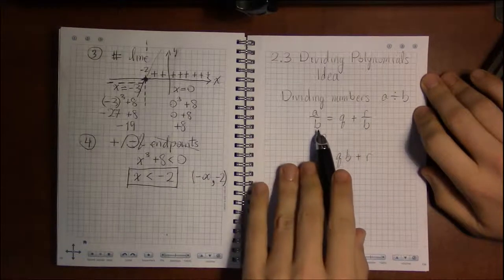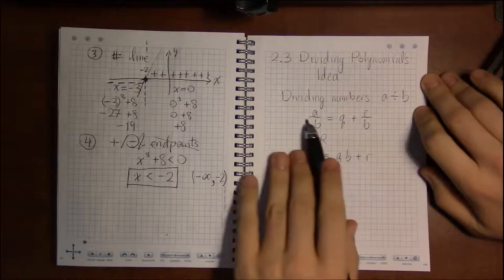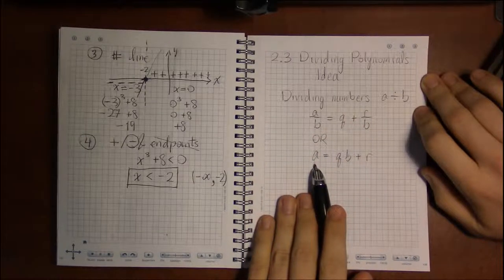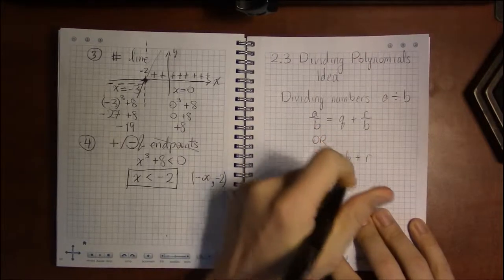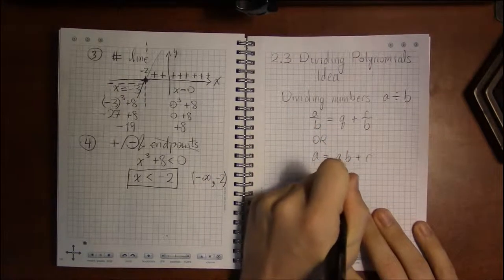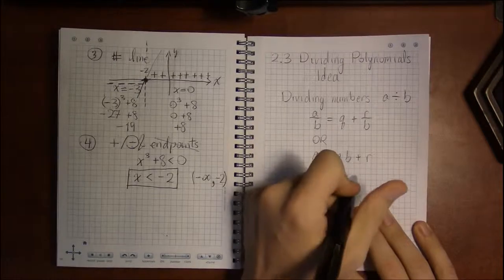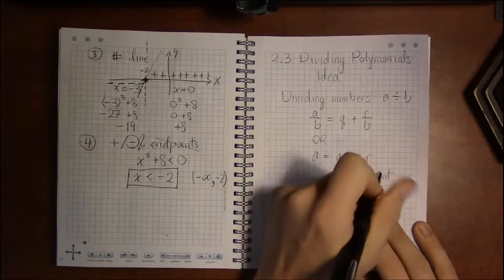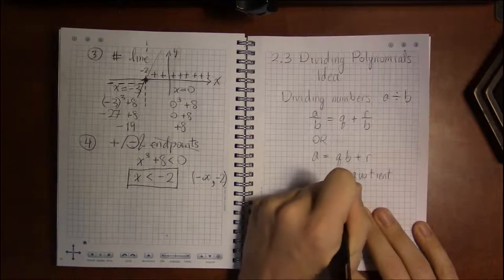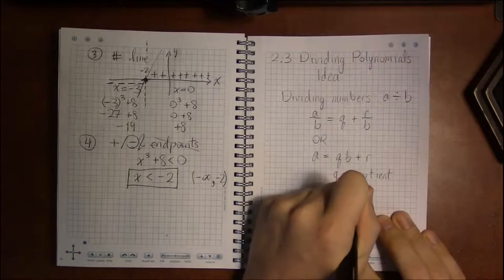Or you could write it out, multiplying both sides by B. You could write this as A equals the quotient Q times B, the denominator, plus a remainder. So Q is our quotient and R is our remainder.